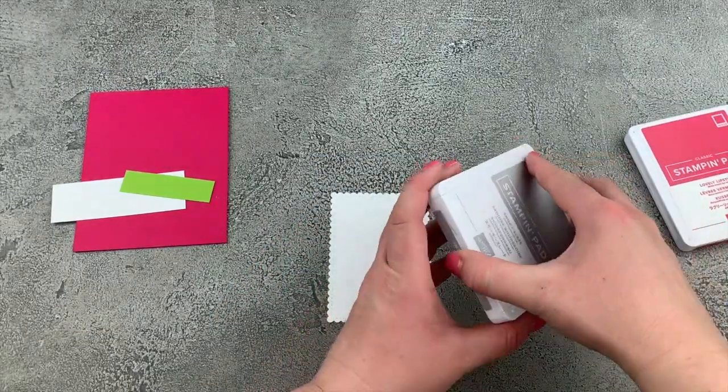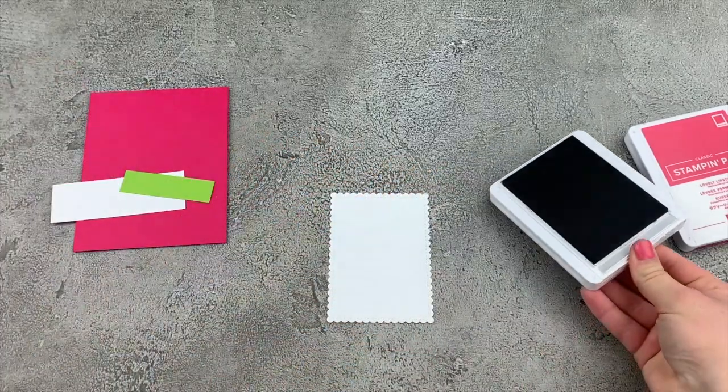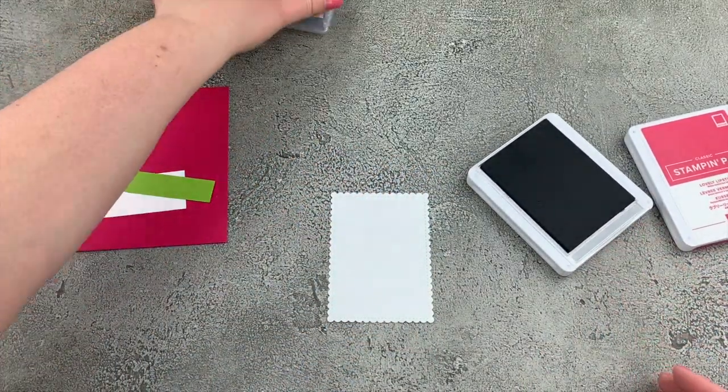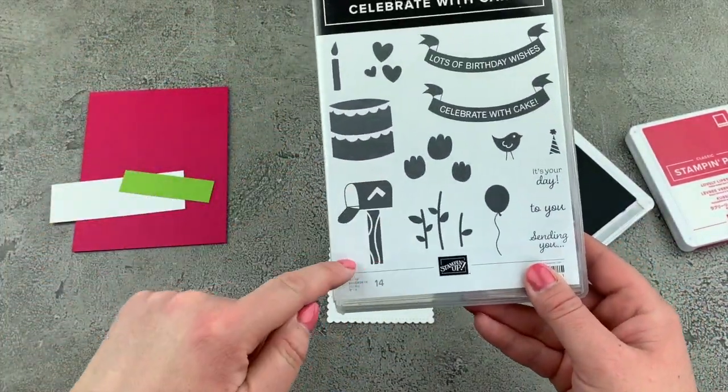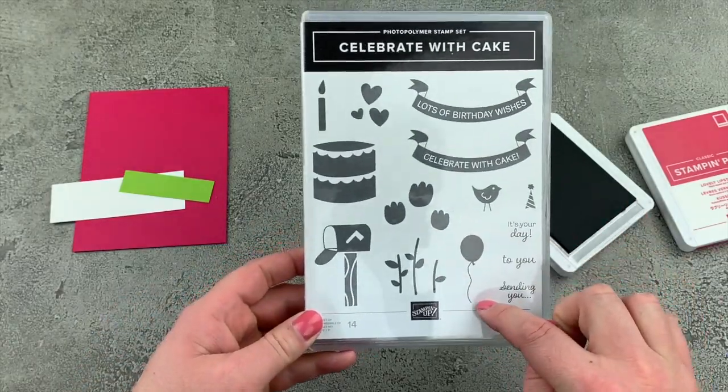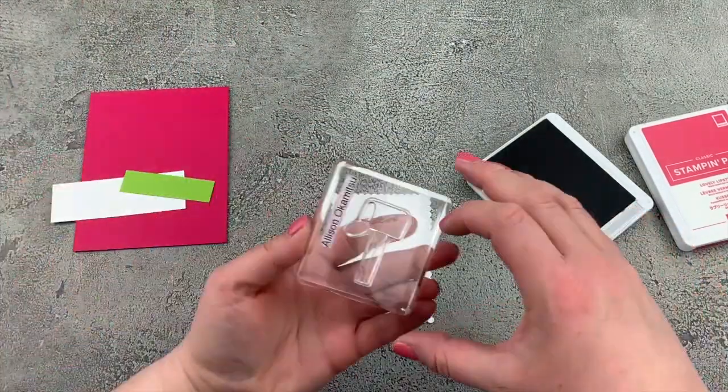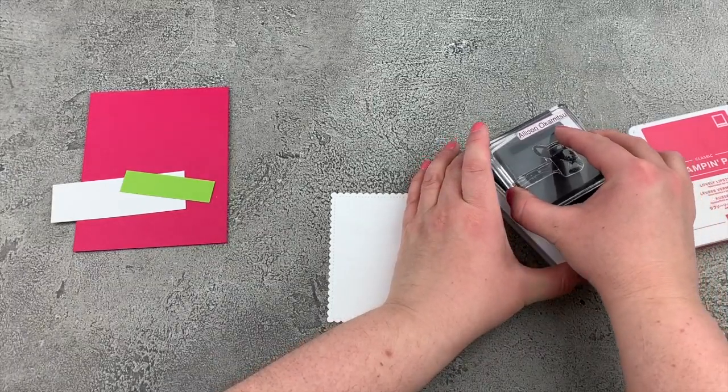I'm going to start with my Smoky Slate and I have the cute little mailbox stamp. I'm using this one right here. We're also going to use the balloon. So I've got the little mailbox and I'm going to stamp that in Smoky Slate.